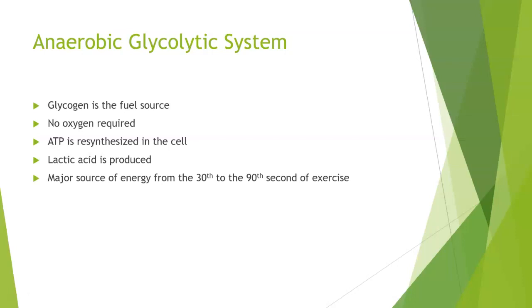The anaerobic glycolytic system uses glycogen as the fuel source — we've gone from the phosphagen, now we're going into the anaerobic system. There's still no oxygen required, and glycogen is the fuel source to create ATP, so ATP is resynthesized in the cell. When we think about the aerobic system, something happens to lactic acid in the presence of oxygen. The anaerobic glycolytic system produces lactic acid, which hangs around and then gets taken out of the muscle off to the liver to be reconstituted. The anaerobic glycolytic system is the major source of energy from the 30th to the 90th second of exercise.